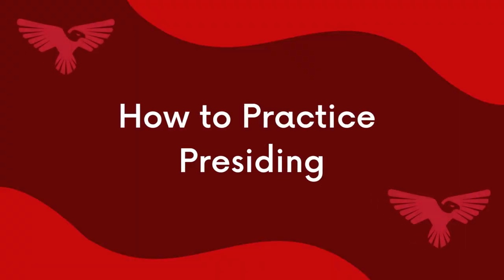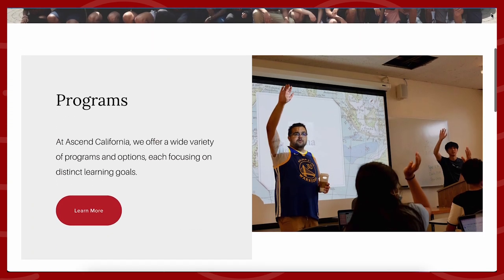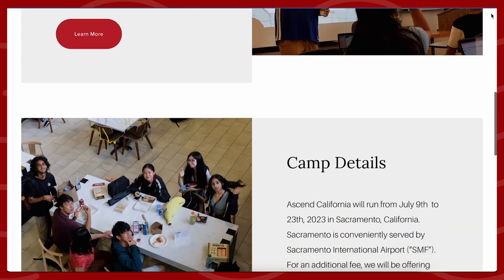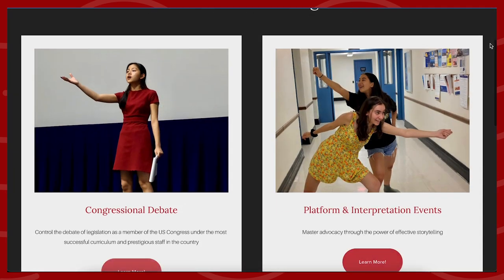To practice presiding outside of a competition, one really helpful tip is to watch a recording of a round — there are tons of recordings of Harvard, Emory finals, and other tournaments. Most of the time you can figure out if they had preset recency or were calling at random. Then go through the recorded round as if you were the PO, practice calling on questioners in order, and double check with the actual PO. If you want to learn more about presiding or Congress in general, please sign up for Ascend California, taking place in Sacramento from July 9th to 23rd of this year.